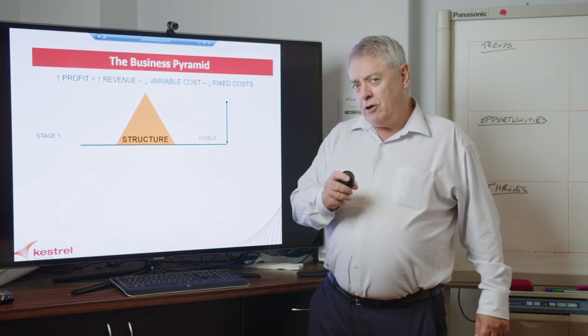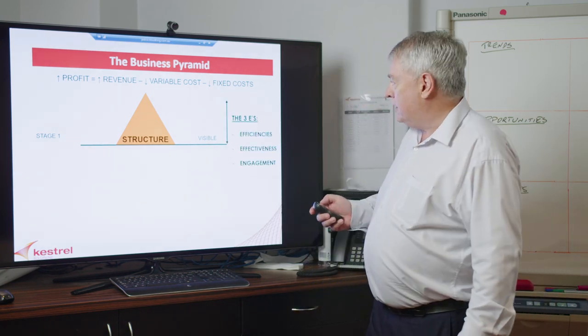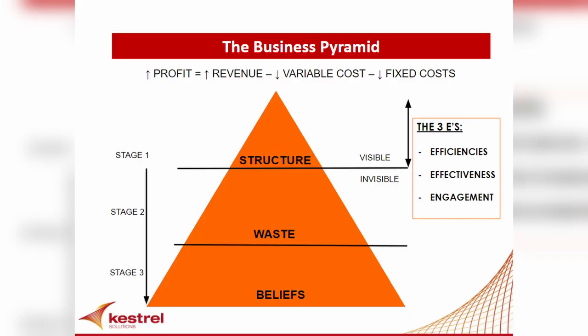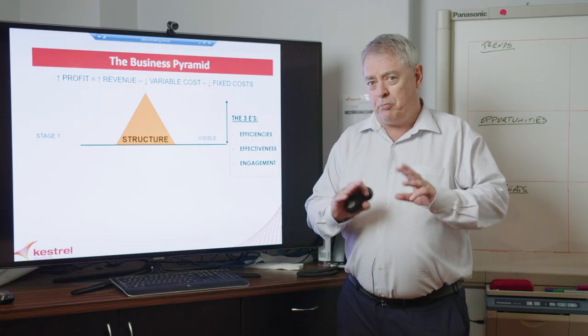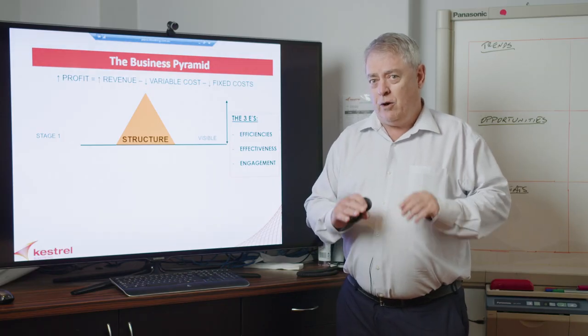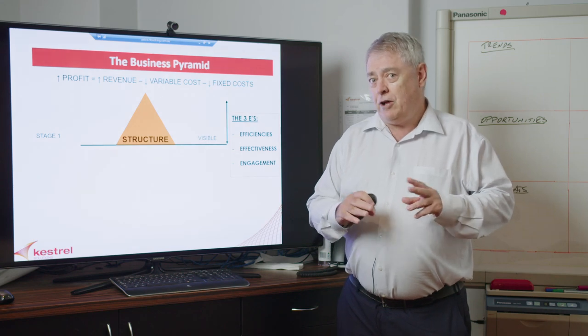But there are three things that don't appear in your profit and loss statement — what I call the three E's: efficiency, effectiveness, and engagement. I'm not just talking about people; I'm talking about your equipment, your processes, and your people. How efficient are they? How effective? How engaged?